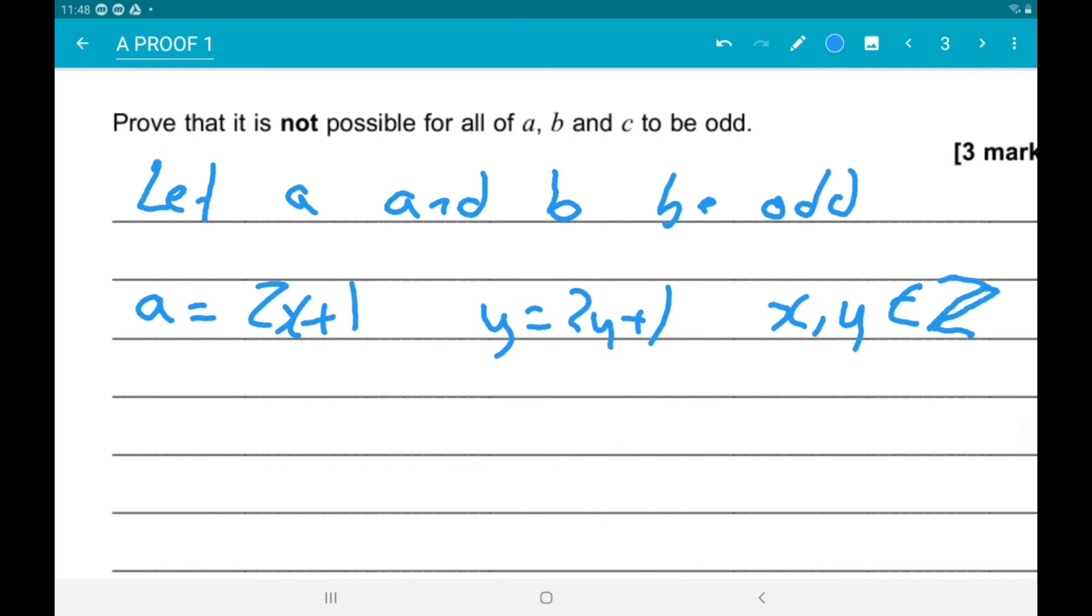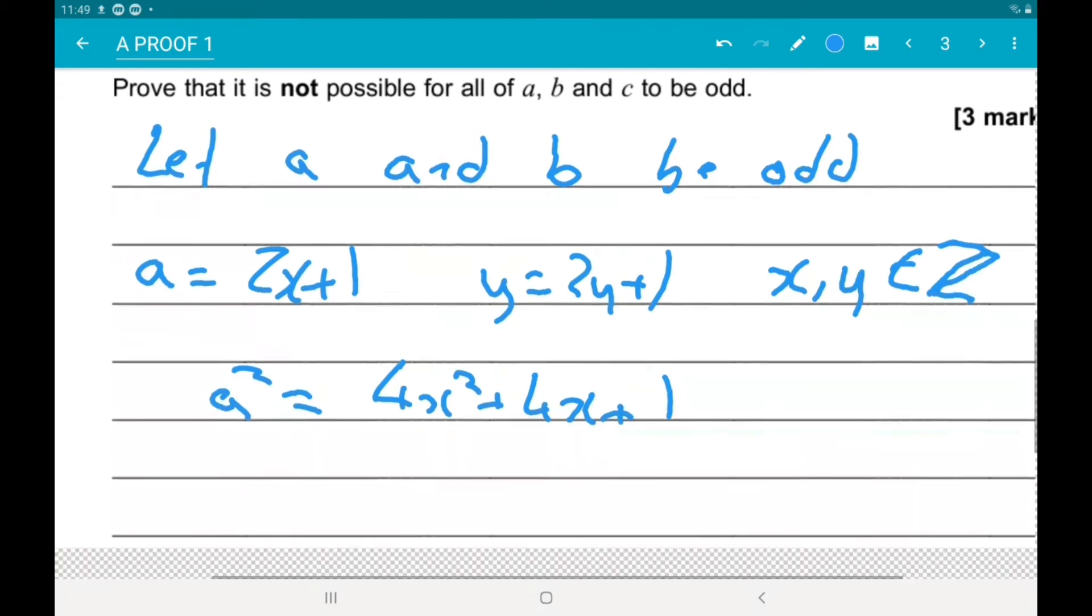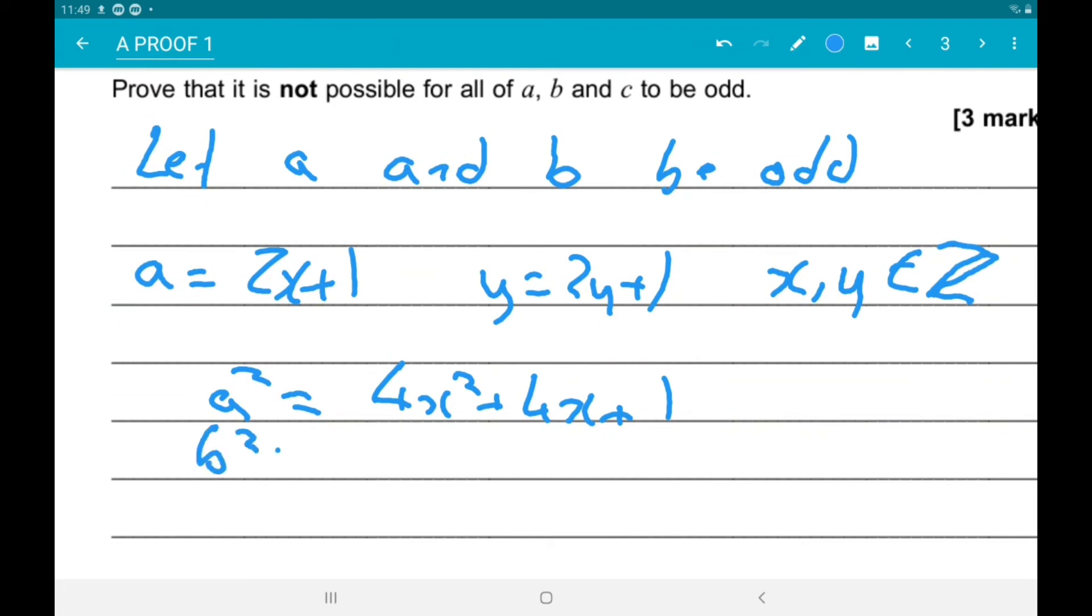Now, we should also say where x and y are integers. Alright, so then a squared is 2x plus 1 all squared. So, 4x squared plus 4x plus 1. And b squared is 2y plus 1 squared. So, 4y squared plus 4y plus 1.